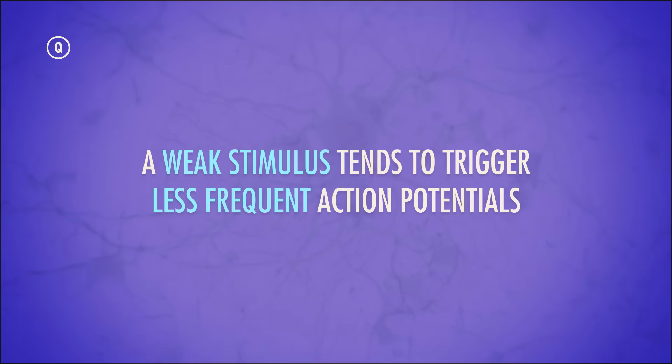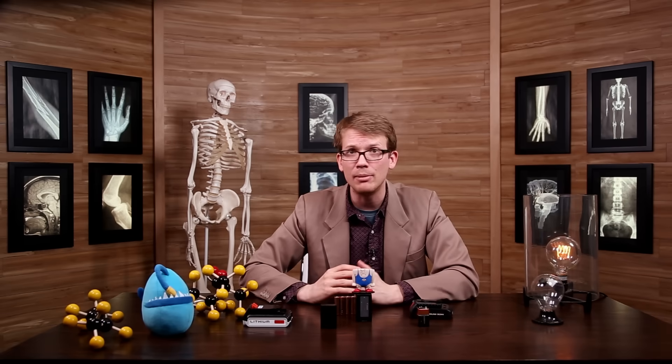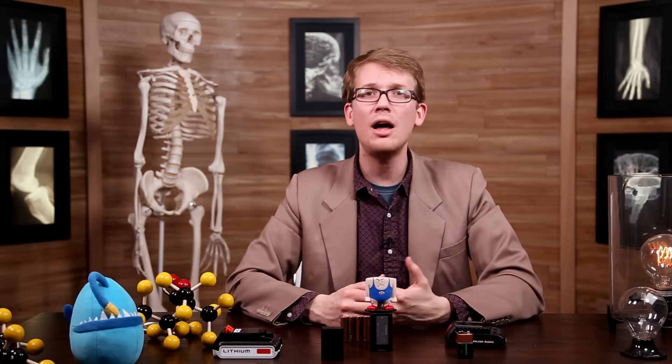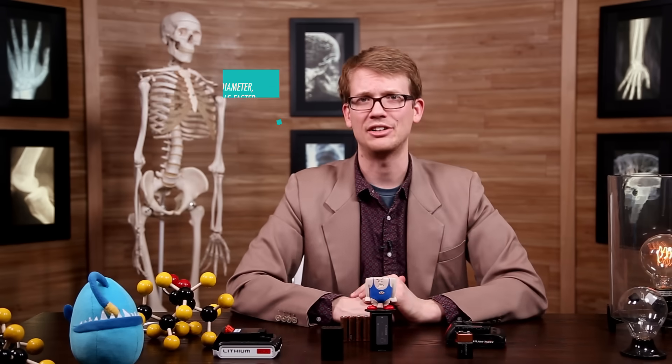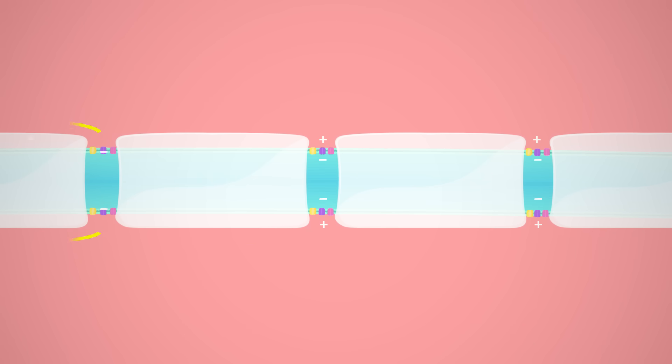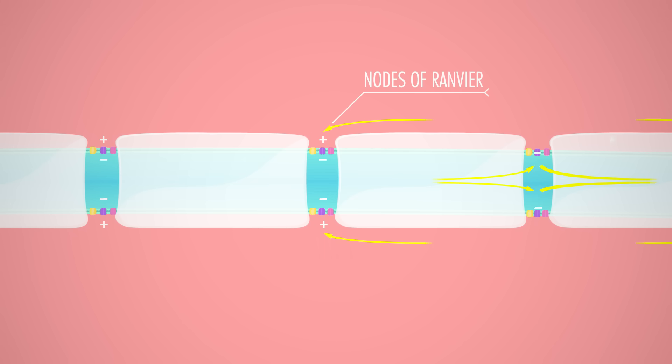A weak stimulus tends to trigger less frequent action potentials — and that includes if the stimulus is coming from you, like your brain telling your muscles to perform some task. If you need to do something delicate, like pick up an egg, the signal is low frequency. But a more intense signal, like trying to crush a can, increases the frequency of those action potentials to tell your muscles to contract harder. Action potentials also vary by speed, or conduction velocity. They're fastest in pathways that govern things like reflexes, but they're slower in places like your glands, guts, and blood vessels. The factor that affects a neuron's transmission speed the most is whether there's a myelin sheath on its axon. Axons coated in insulating myelin conduct impulses faster than non-myelinated ones, partly because a current can effectively leap from one gap in the myelin to the next — these little gaps are the delightfully named nodes of Ranvier, and this kind of propagation is known as saltatory conduction, from the Latin word for leaping.